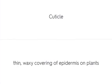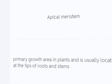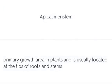The cuticle is a thin, waxy covering of the epidermis on plants. Meristematic tissue is where mitosis occurs and is the location of growth. The apical meristem is the primary growth area in plants and is usually located at the tips of roots and stems.